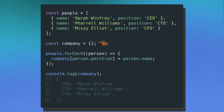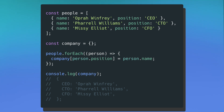So here we have my people array where people now have different names and a position attached to them. I create a new empty company object. Right below that, I call the forEach method on my people array, and inside the callback function, I assign the person's position inside my company object to the name of the person who holds that position. If I print out this new company object, I can see that my CEO is Oprah Winfrey, my CTO is Pharrell Williams, and my CFO is Missy Elliott. But again, I feel like this code can be further simplified and even more clear for people reading it.